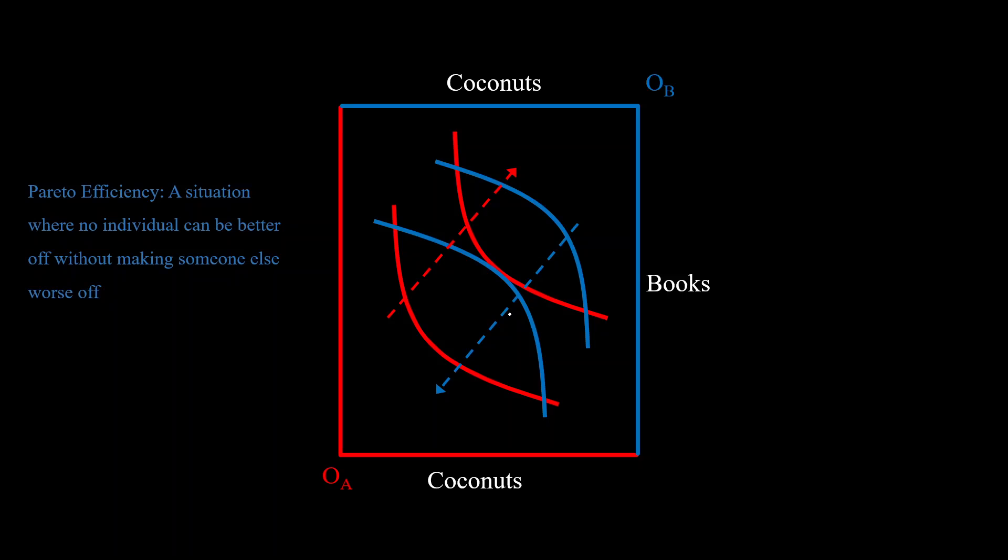Alright. So the indifference curves for A are moving in this direction and for B are moving in the opposite direction. Let's take a look at this point where the indifference curves for both the agents are intersecting and try to check if this is Pareto efficient. The question we have to ask ourselves is if there is a way to make both of the agents better off. If there is, then this point is not Pareto efficient.